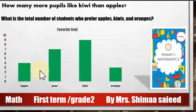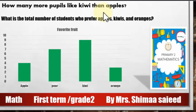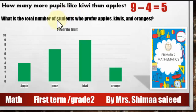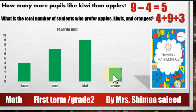How many students like kiwi? 9. How many students like apple? 4. So how many more people like kiwi than apple? That means 9 minus 4, which is 5. What is the total number of students who prefer apples, kiwis, and oranges? Apples: 4 students; kiwis: 9 students; oranges: 3 students. So the total is 4 plus 9 plus 3, which equals 16 students.